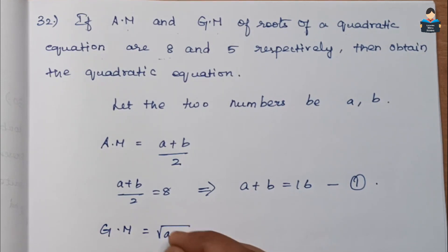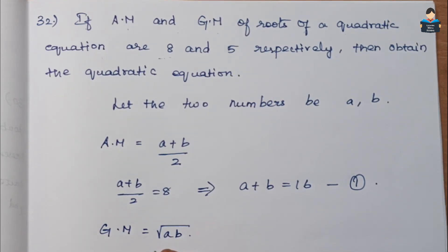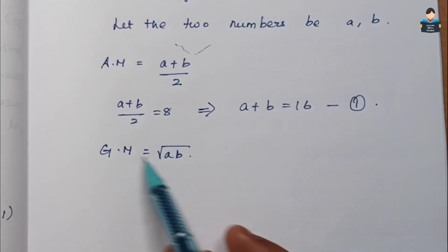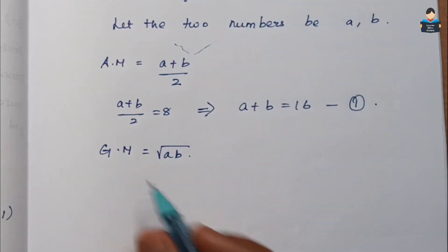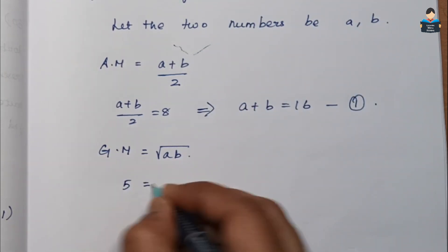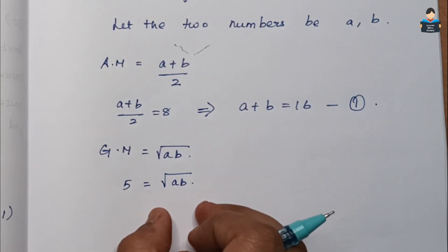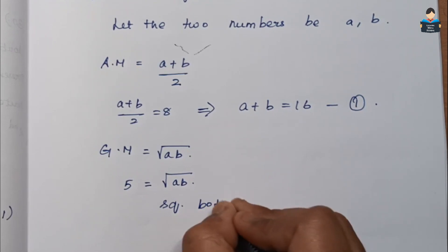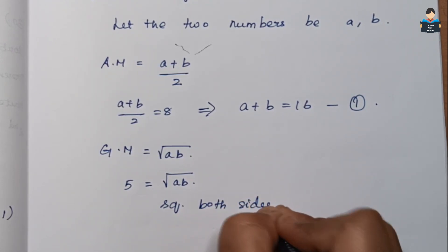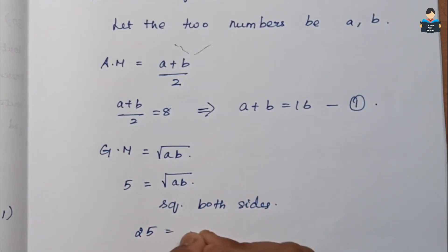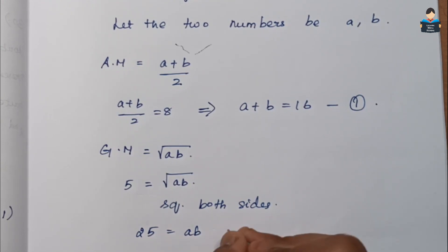The GM is square root of ab. So 5 equals square root of ab. Squaring both sides: 25 equals ab. This is the second equation.